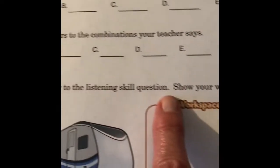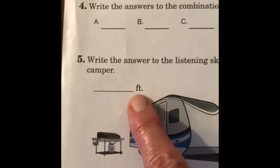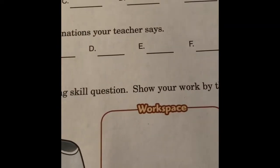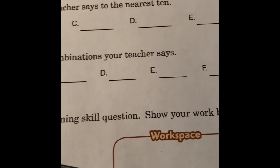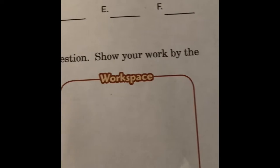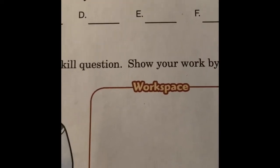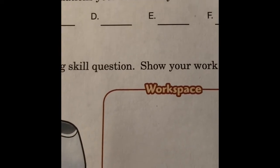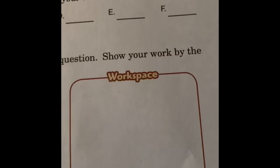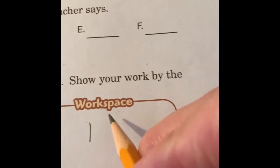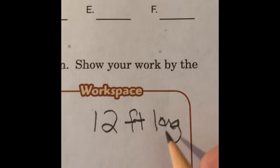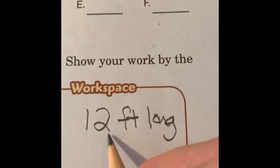Write the answer to the listening skills questions. Show your work by the camper. Okay, here we go. Our listening questions here. Grandma and Grandpa's camper is 12 feet long. The camper's park next to theirs at the campground is 8 feet long. How many feet longer is Grandma and Grandpa's camper than the one next to it?